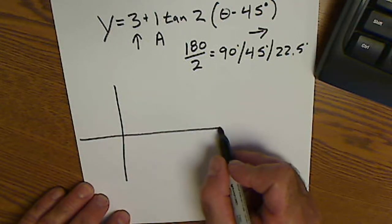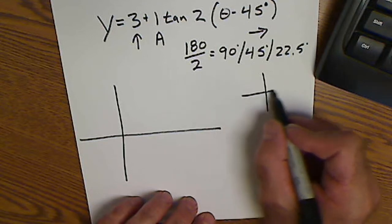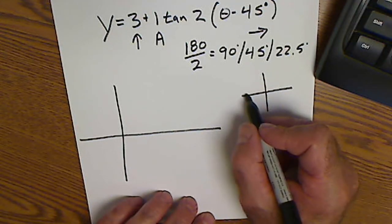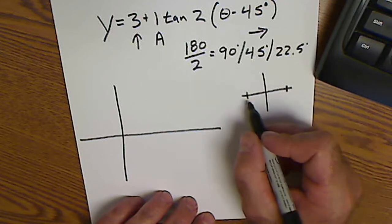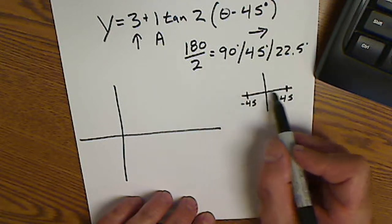Because it's tangent—tangent's the only graph I do a little subgraph in—and that subgraph just takes the period into account. It's going to start at negative 45 and go to 45, because the total distance is 90.